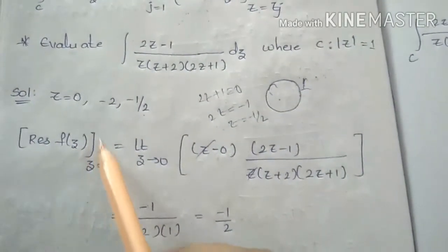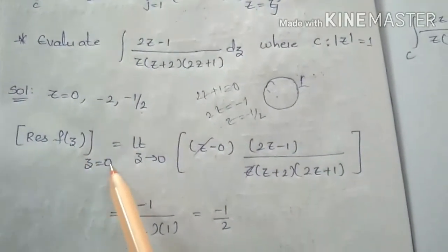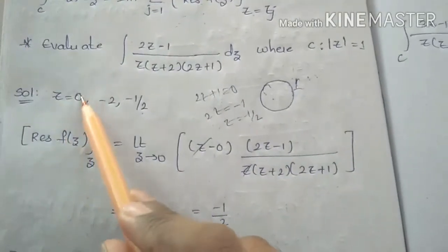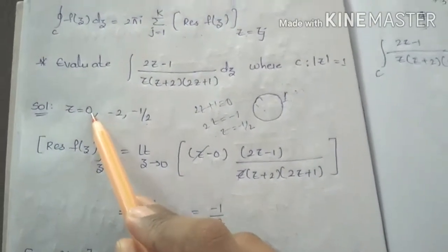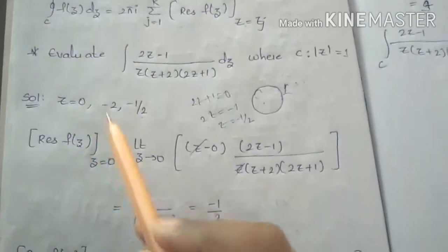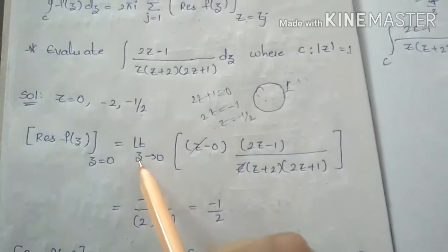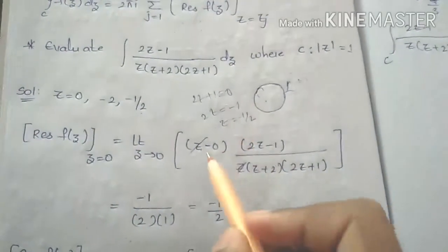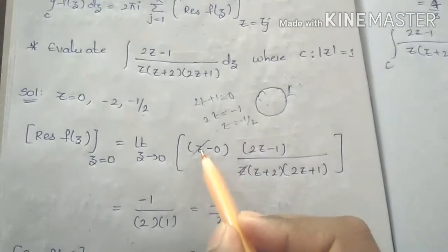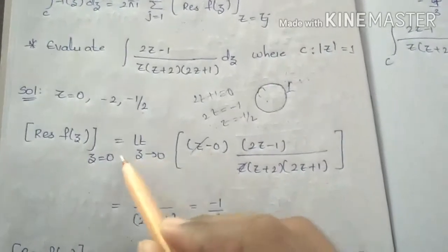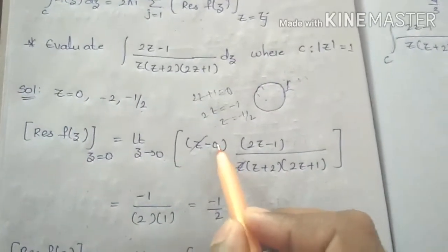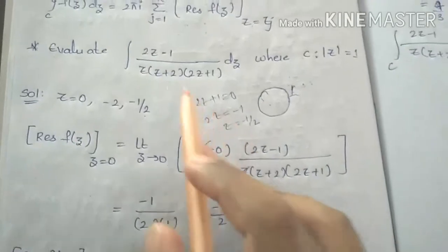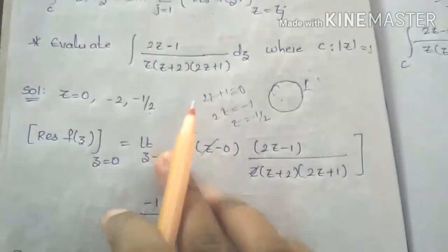Residue of f(z) at z equals 0. First residue value: we use the formula z minus a, where a equals 0, so z minus 0, times f(z). Here we use the first formula for a simple pole of order 1.